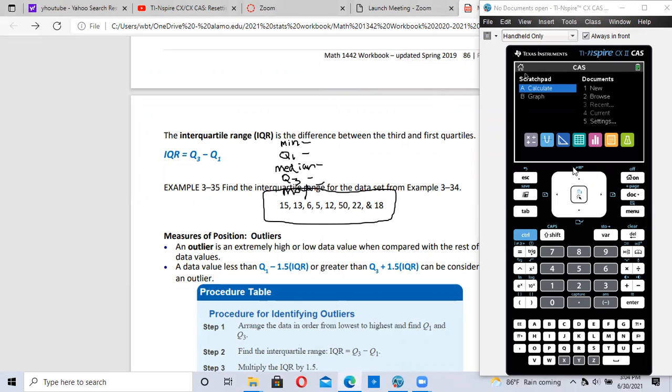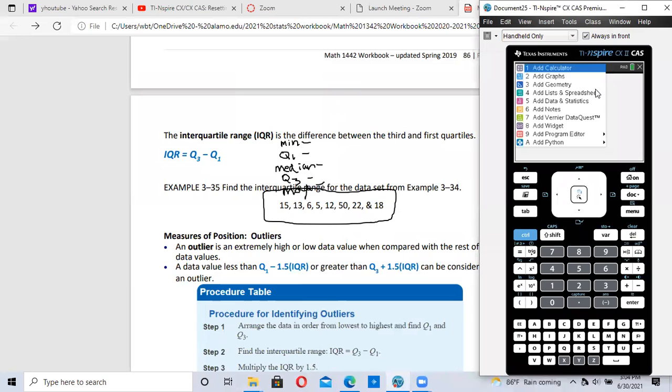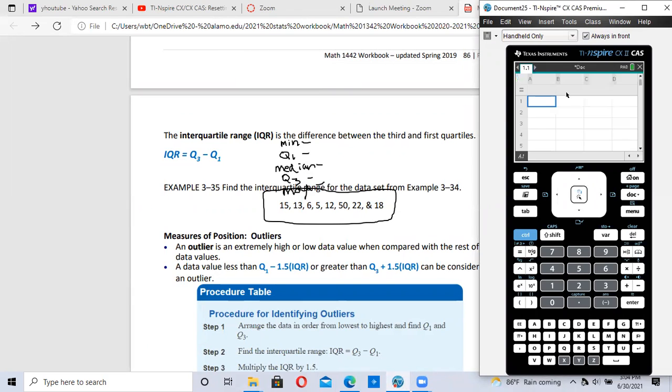We're going to click on new, number four, add list and spreadsheet. I'm going to label column A as L1, list one, and I'm going to enter in my data.